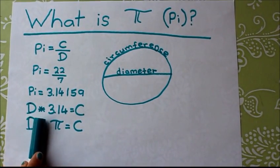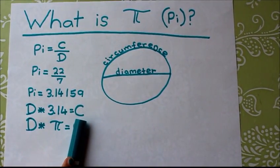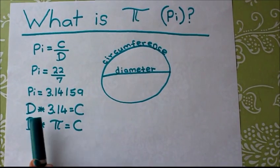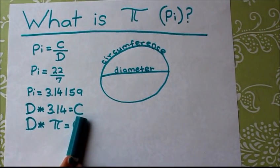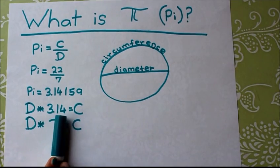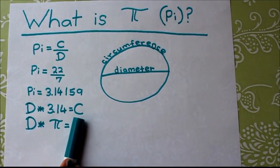So the diameter times 3.14 equals the circumference. If you know the diameter, then you'll know the circumference because you just have to multiply it by 3.14.